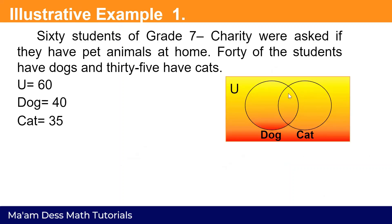Example one: 60 students of Grade 7 Charity were asked if they have pet animals at home. 40 of the students have dogs and 35 have cats. So the universal set is 60 — the students in Grade 7 Charity — 40 is the number of students with pet dogs, and 35 is the number of students with pet cats. Look at the Venn diagram. We'll draw a rectangle and label it U for universal set. The first circle is for the set of dogs and the second circle for the set of cats.